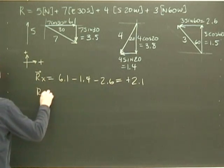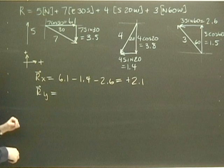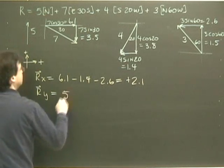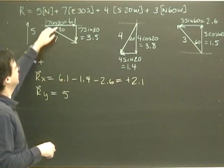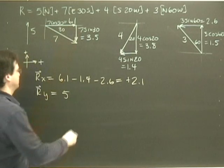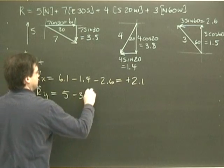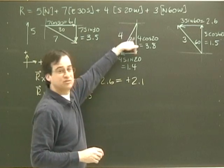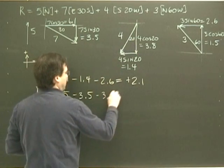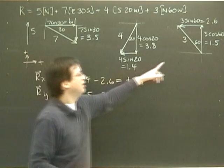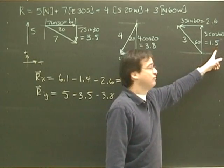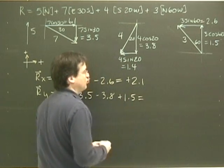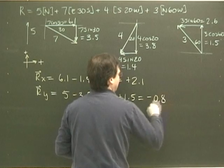Now I'm going to add up all the y's. In the y direction, well, the 5, it's up, so it's going to be positive. For this 7, the y component is down, it's minus 3.5. On this triangle here, the y component is 3.8, it's down, so it's minus 3.8. And over here, the y component is 1.5, it's up, so it's plus 1.5. So my total in that direction is negative 0.8.